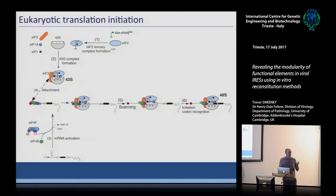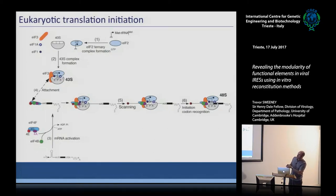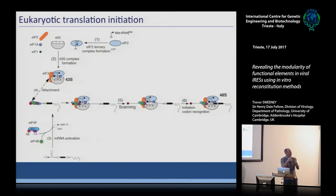The messenger RNA first has to be activated through recognition of the cap structure at the 5' end by EIF4E, part of the larger EIF4F complex. EIF4F contains an RNA helicase which relaxes the structure at the 5' end to activate the RNA for translation. An interaction between EIF3 and the 4G subunit of EIF4F recruits the 43S complex to the 5' end of the messenger RNA.